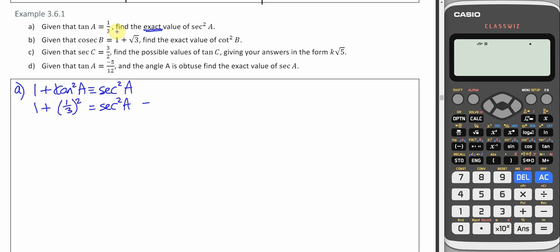So in this question, sec squared A is 1 plus the square of a third, which is 1 plus a ninth, which is 10 ninths.